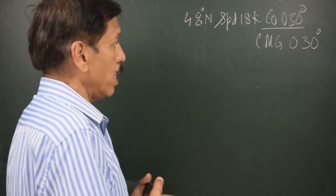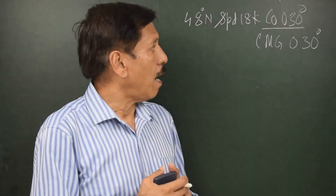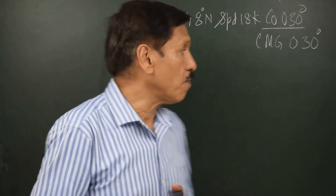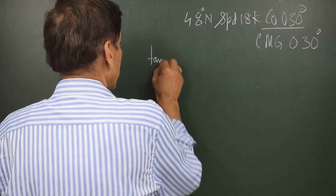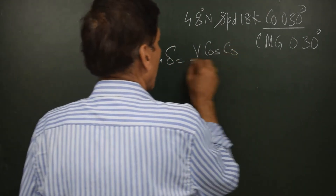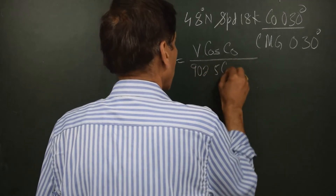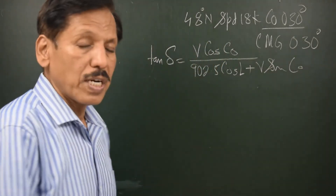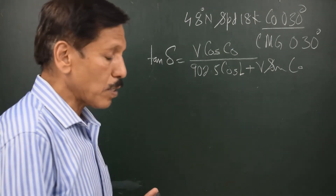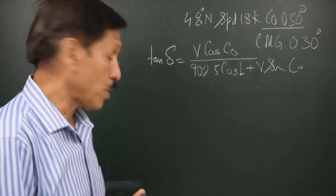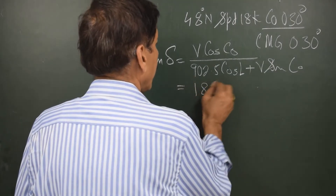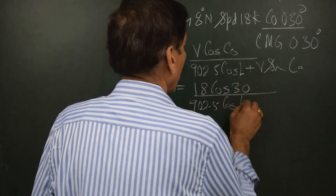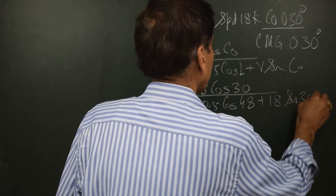In most situations like this, we will find out rho. First, let us find out the north-south speed error. The formula is: tan(delta) = V cos(course) divided by 902.5 cos(L) plus V sin(course). For the numerical, always put three-digit course and do not worry about plus or minus sine, because we are on a northerly course and the error has to be westerly.